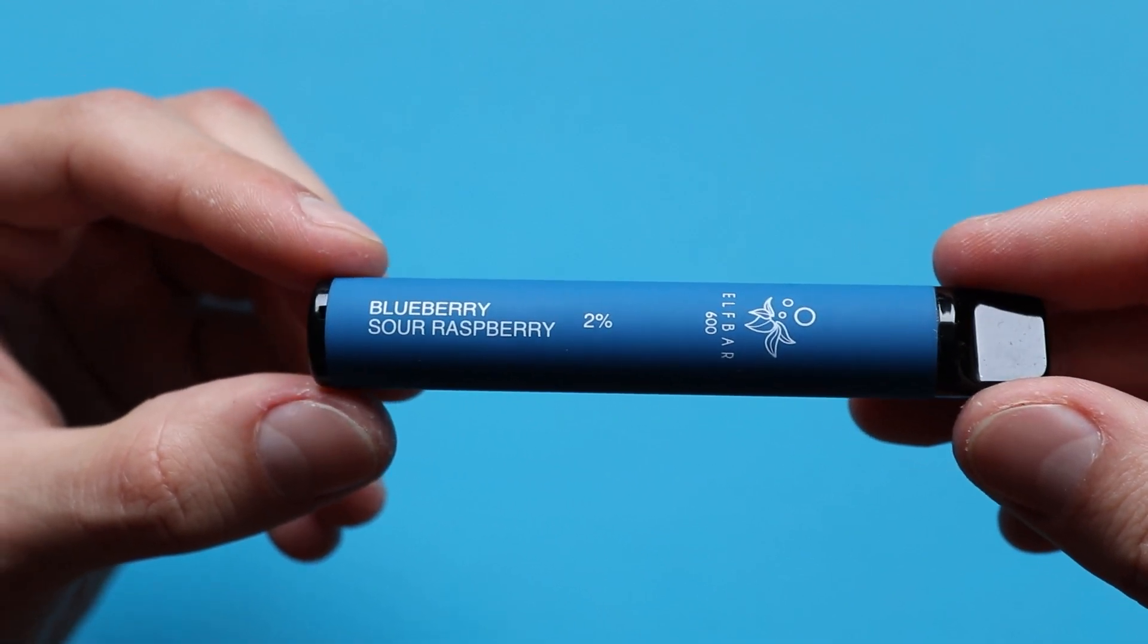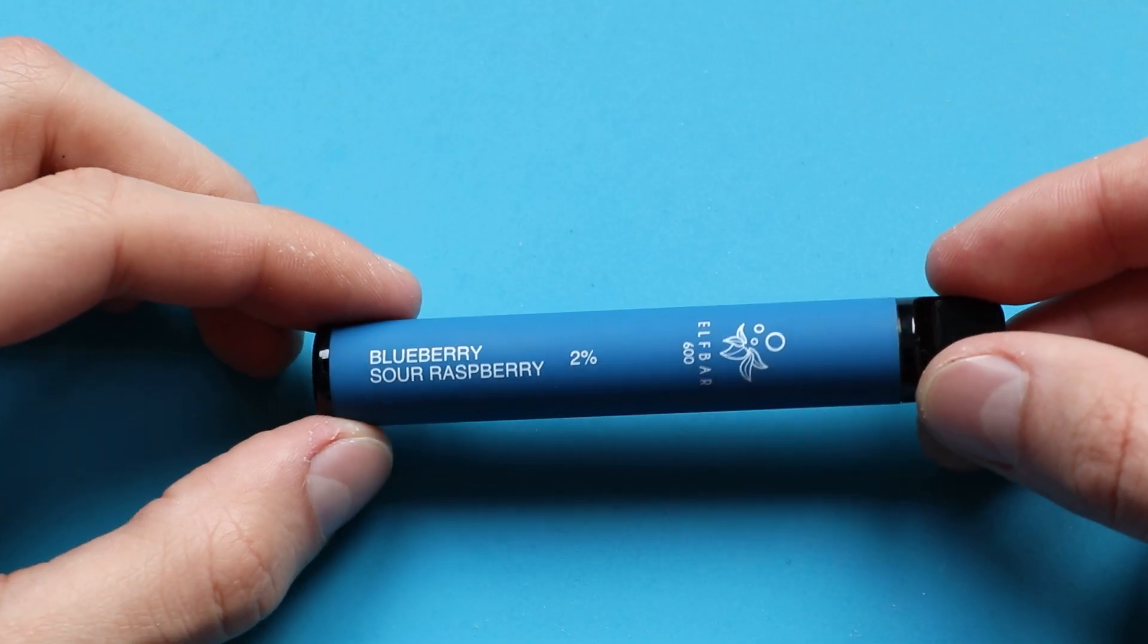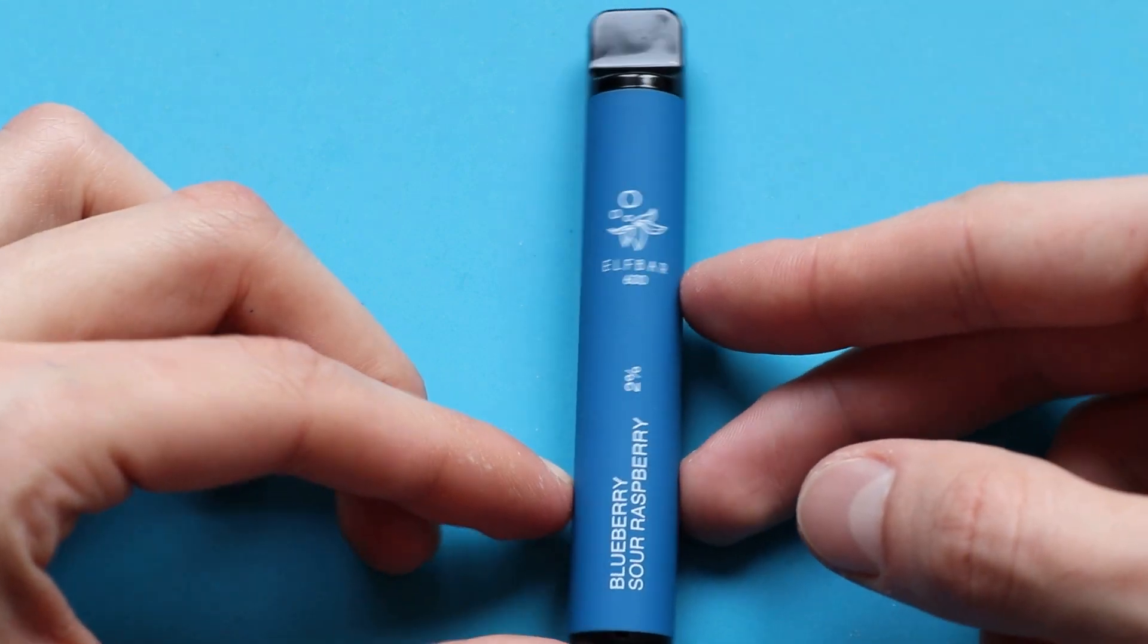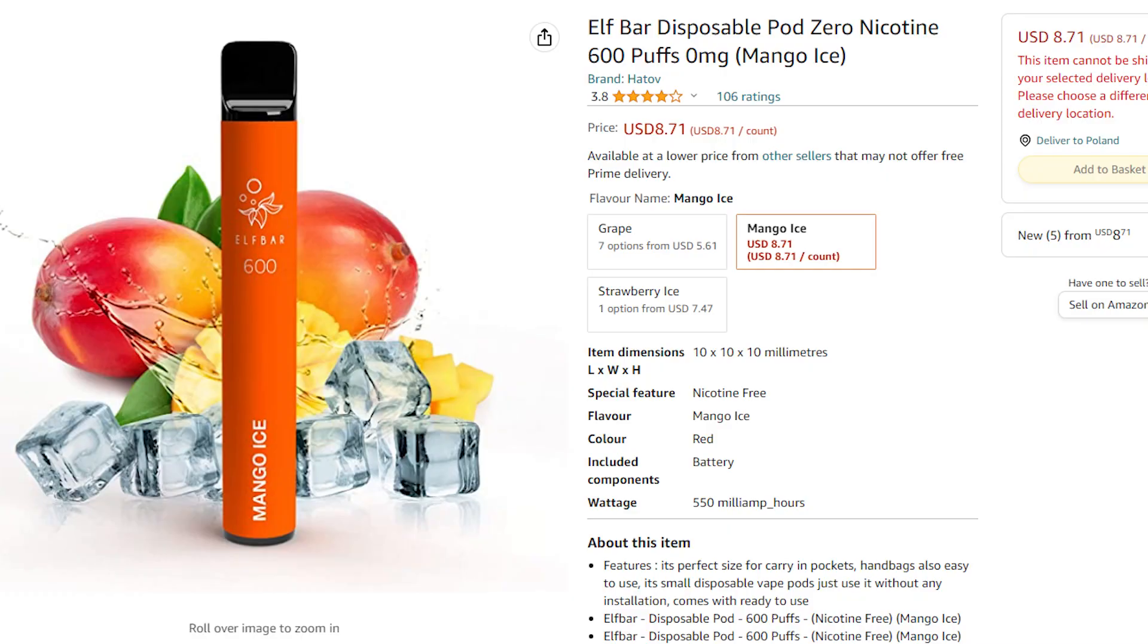So, meet on the stage disposable Elfbar 600, where 600 is the number of puffs it can provide. On Amazon it costs approximately 9 bucks.